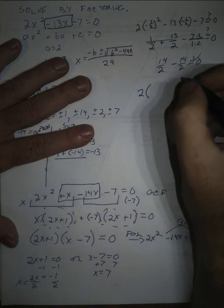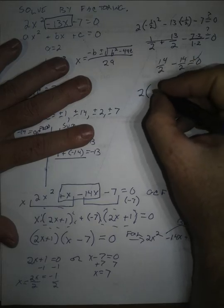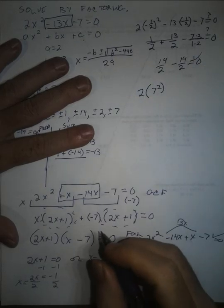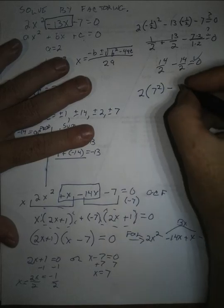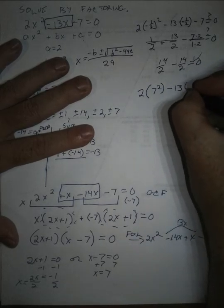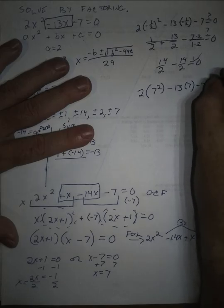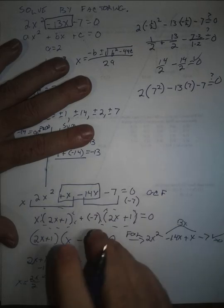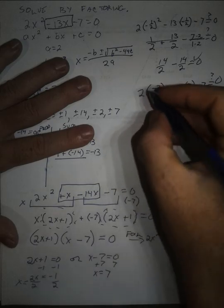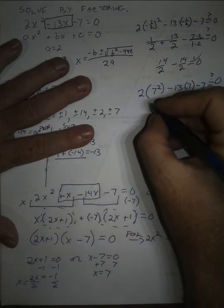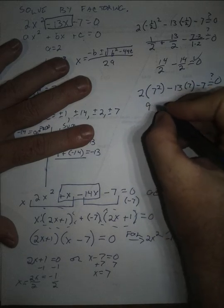2 times 7 squared minus 13 times 7 minus 7, is that zero? Well, this is 2 times 49, which is 98,